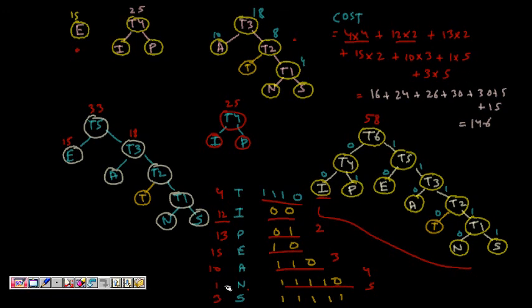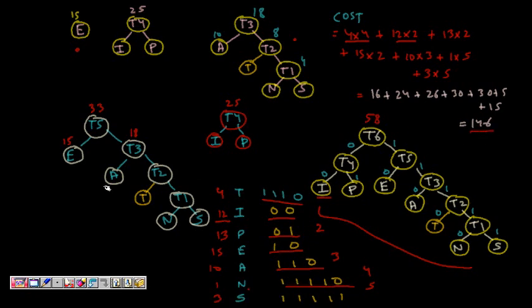And N is occurring one time into five. S is occurring three times into five. So 146 is the total weight. Initially it was 174 if we assigned three bits to all of the code words. So this is the benefit we are getting. So this was about Huffman encoding.